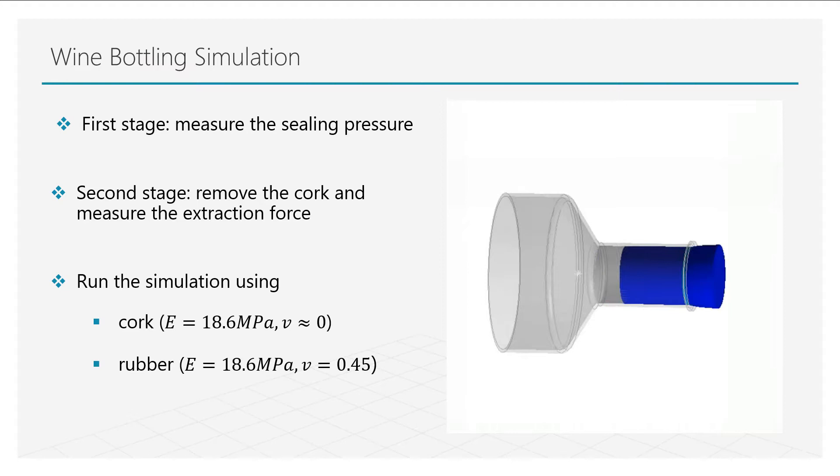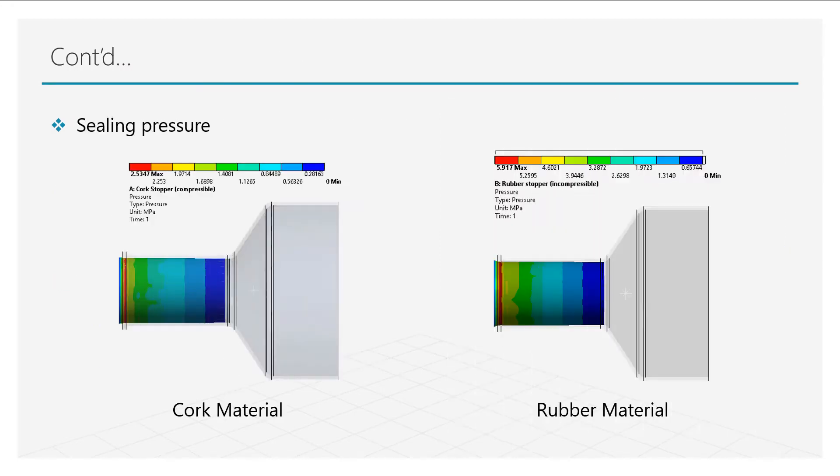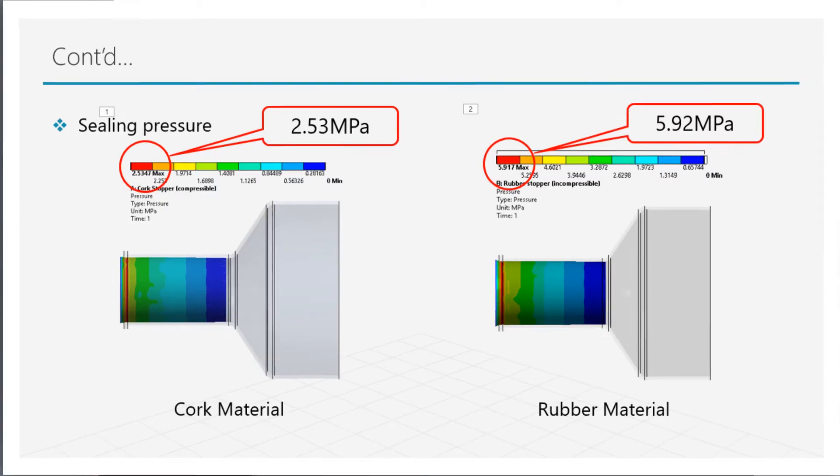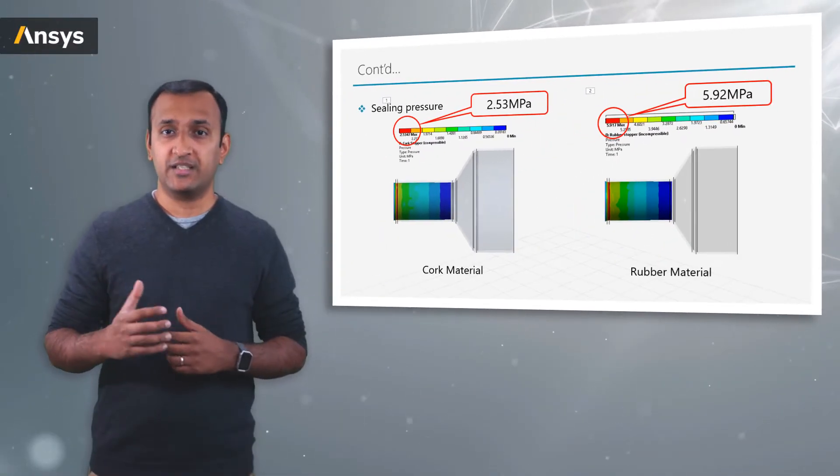Now let's investigate the sealing pressure for both the cases at the end of stage one. Here are the contour plots for sealing pressure for both the cases. In case of cork, the maximum pressure is about 2.5 megapascals and it's almost 6 megapascals in case of hypothetical rubber. This is interesting because both the materials have same elastic stiffness, but cork can change its volume easily.